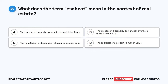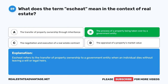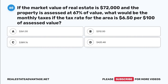Question 59. What does the term 'escheat' mean in the context of real estate? A. The transfer of property ownership through inheritance. B. The process of a property being taken over by a government entity. C. The negotiation and execution of a real estate contract. D. The appraisal of a property's market value. The correct answer is B: The process of a property being taken over by a government entity. Escheat refers to the transfer of property ownership to a government entity when an individual dies without leaving a will or legal heirs.